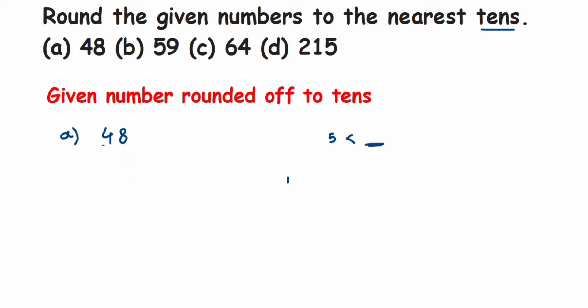In question 48, they're asking us to round off to nearest tens. I check the number in the ones place — it's 8. Now 8 is greater than 5, so I add plus 1 to the number in the tens place. So 4 plus 1 gives me 5, and the remaining digit — the 8 — becomes 0. So the answer is 50. When you round off 48 to the nearest ten, it becomes 50.